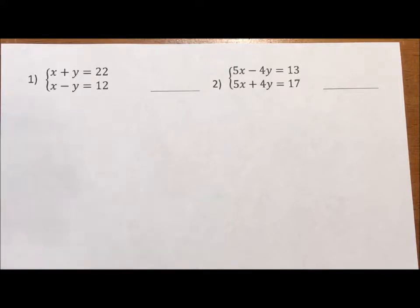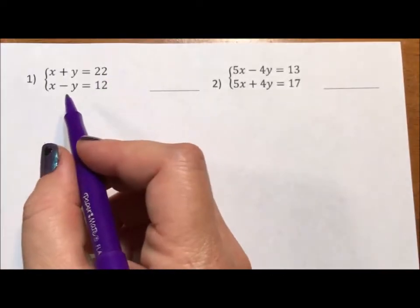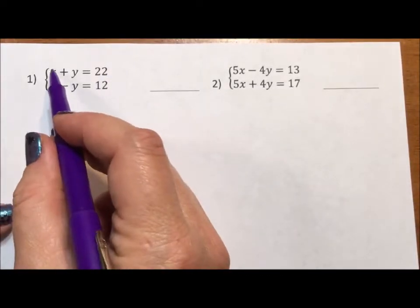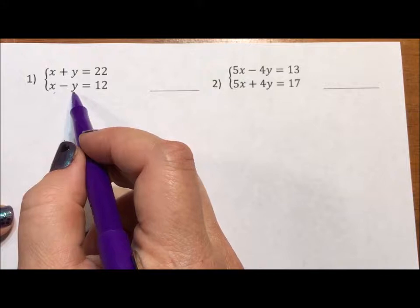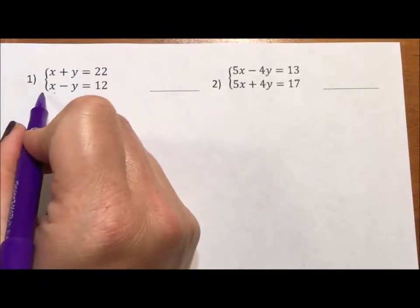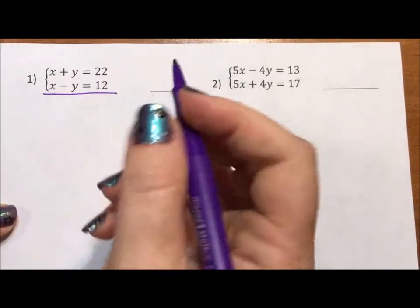This particular problem I'm going to solve through elimination. The reason I'm going to do elimination is because the way it's set up, the x's are in line, the y's are in line, the equal signs are in line, as are the numbers. If I just put a line under here and add down,